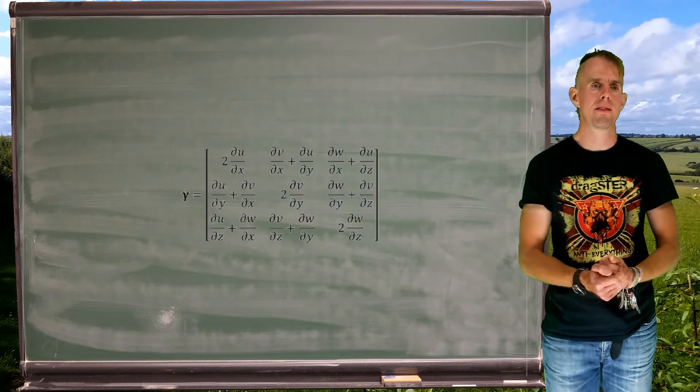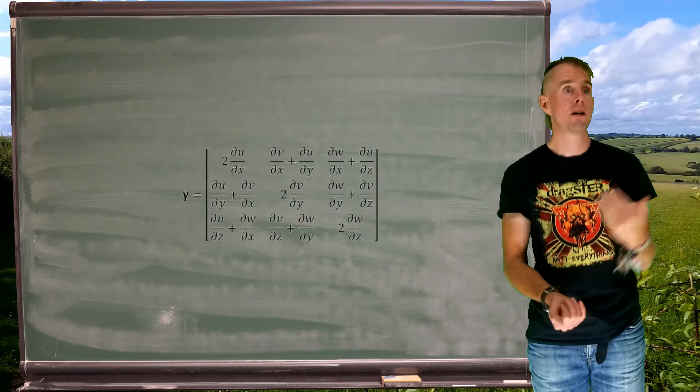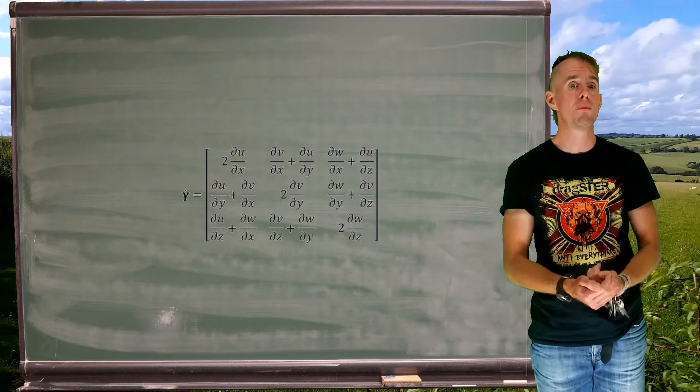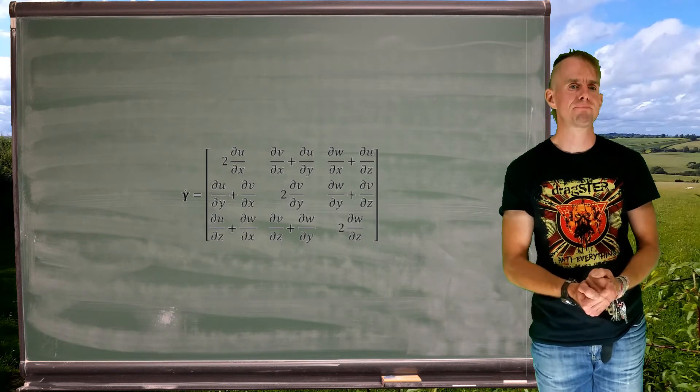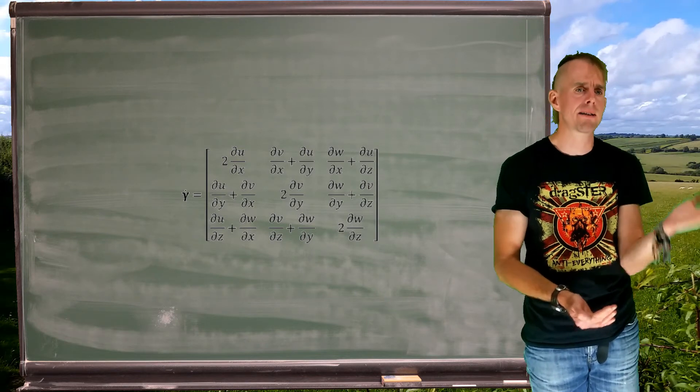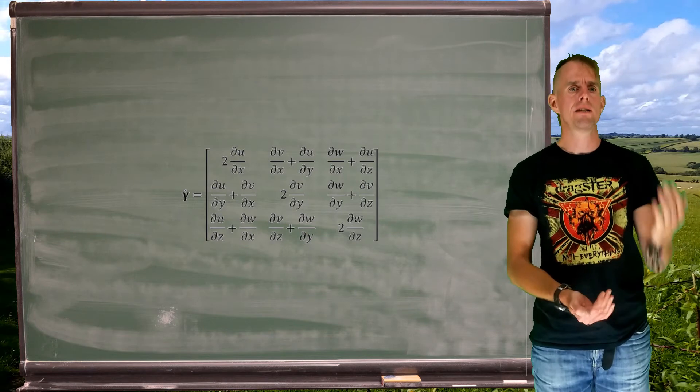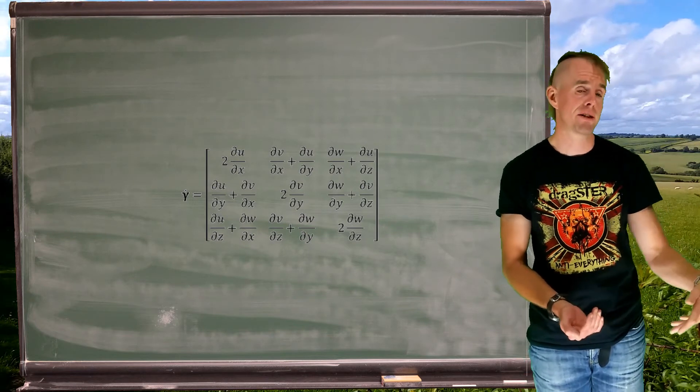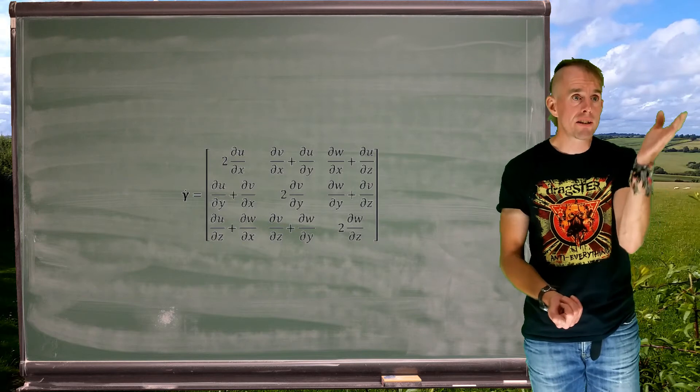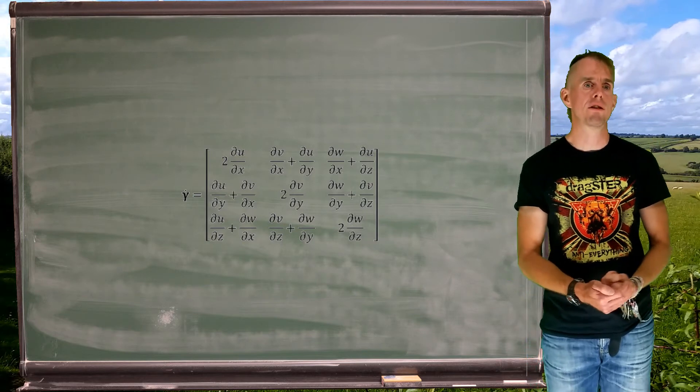Let's write it out in full. For example, there we go, on the principal diagonal, two du dx, two dv dy, two dw dz. On the upper and lower triangular sections, we have dv dx plus du dy, du dy plus dv dx. So we can see that we have, indeed, tensorial symmetry.